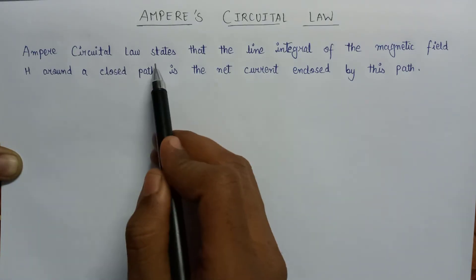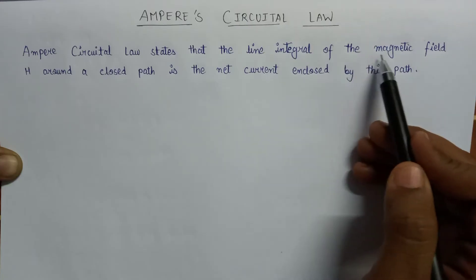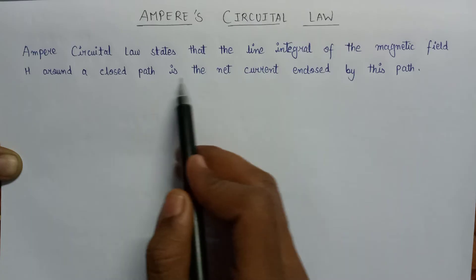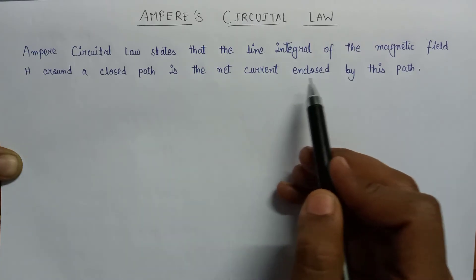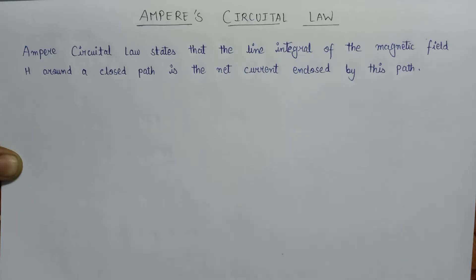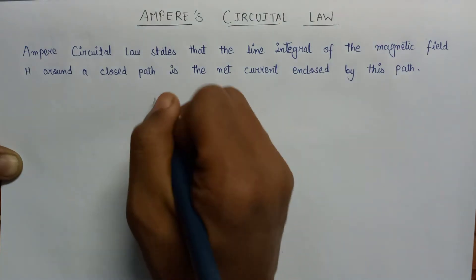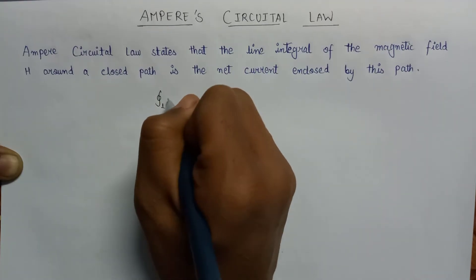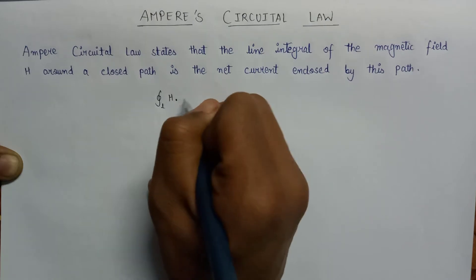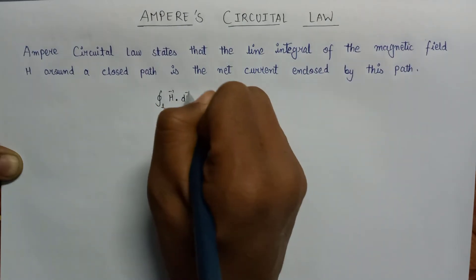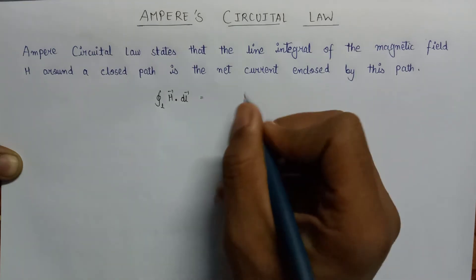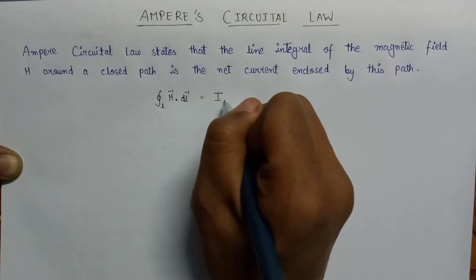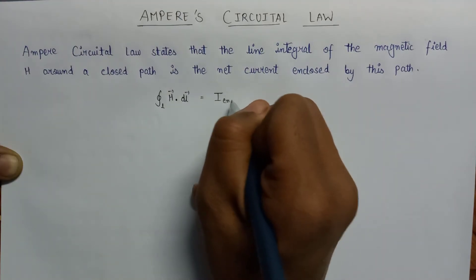The Ampere's Circuital Law states that the line integral of the magnetic field H around any closed path is the net current enclosed by this path. Mathematically, it is the line integral of magnetic field H dot dL equals total current enclosed by this path, denoted by I enclosed.